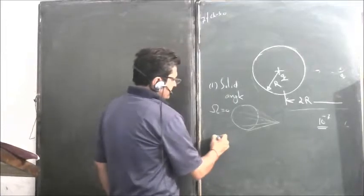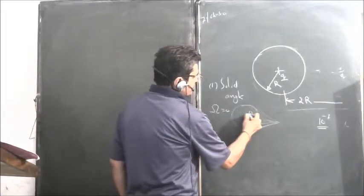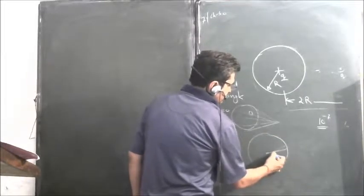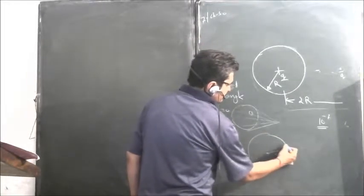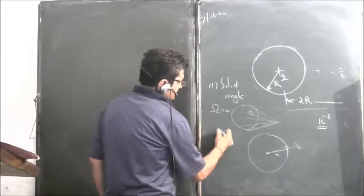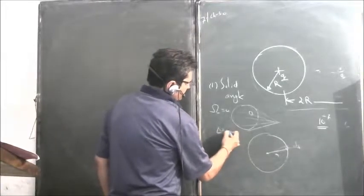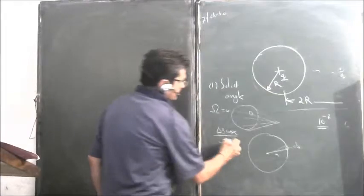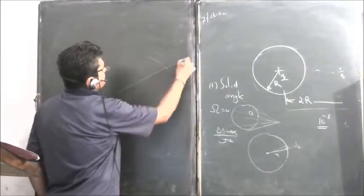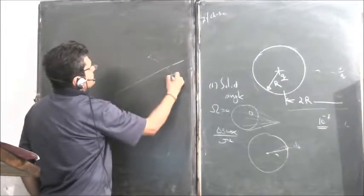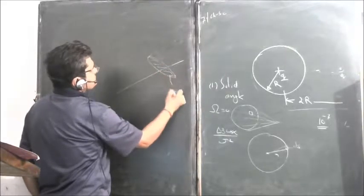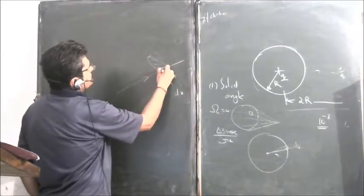Second, solid angle is written as: if you take a small element, let us take a point inside at a distance R, and there is a small surface dS, then the solid angle is dS cos alpha upon R square. Let me show it like this. If this is dS and this is R, if you look in three dimension it is like this. This is dS, this is vector R.